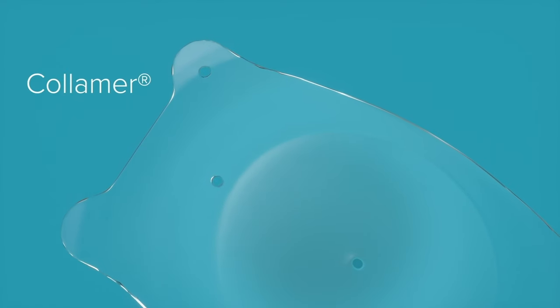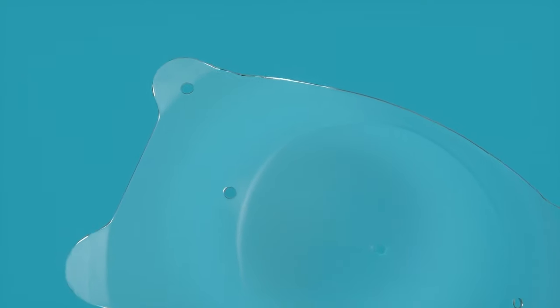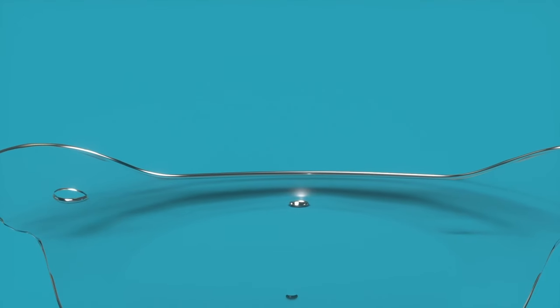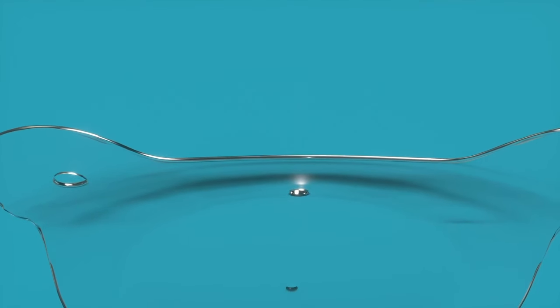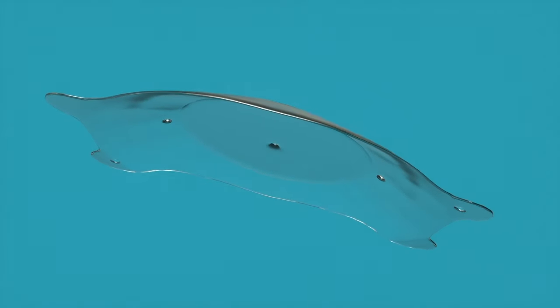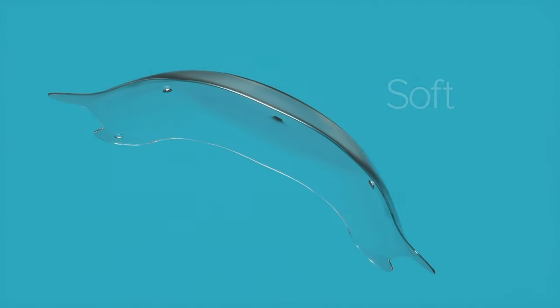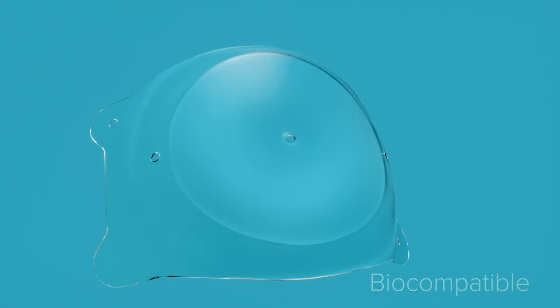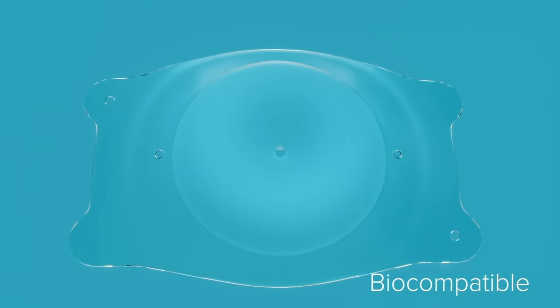EvoVizion ICL's collamer material contains a small amount of purified collagen and the remainder is made of a similar material to that found in soft contact lenses. Collamer makes the EvoVizion ICL lens soft, flexible and biocompatible, which means the lens is stable inside the eye.